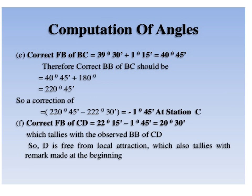In this slide we apply the correction at B. Therefore, corrected fore bearing of BC equals 39 degrees 30 minutes plus 1 degree 15 minutes, giving a corrected fore bearing of BC equal to 40 degrees 45 minutes. Since this bearing is less than 180 degrees, we add 180 degrees to get the corrected back bearing of BC, giving 220 degrees 45 minutes. But the observed back bearing of BC is 222 degrees 30 minutes. Therefore the correction at C equals minus 1 degree 45 minutes.